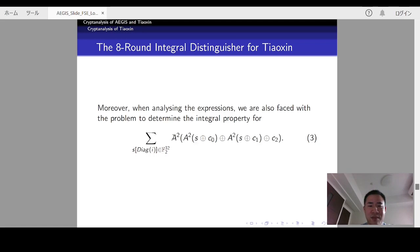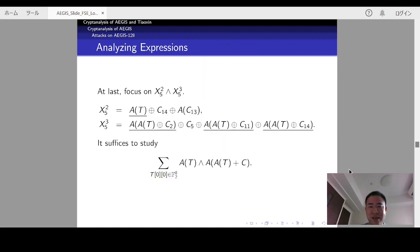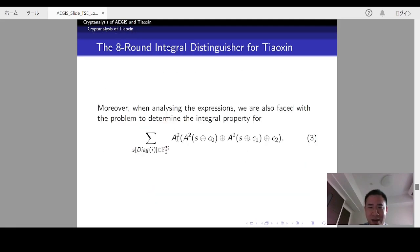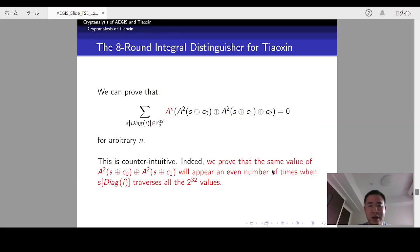At the first glance, it seems that we may have the integral property because s only passes through 4 AES rounds. However, if you started by drawing some figures like this, you will find that you don't know what the actual integral property is. Indeed, we prove that for arbitrary aim, it will always be balanced. This is surprising. And the main reason why we have such a property is that the same value of this will appear an even number of times when a certain diagonal of s traverses all the 2 to the 32 values.